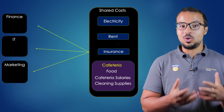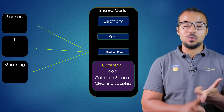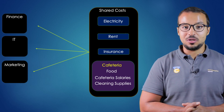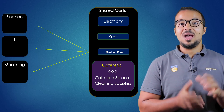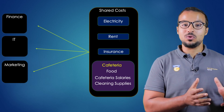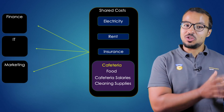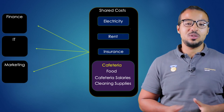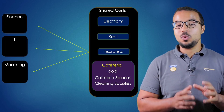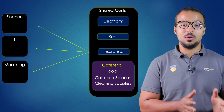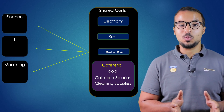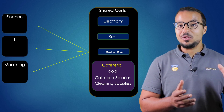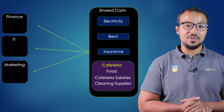The shared cost center is used to post the electricity, rent, insurance, cafeteria, and any other shared expenses. We pay the rent and electricity once for the entire building. Then we allocate those costs from the shared cost center to the departmental cost centers — something we do every month. So how can we streamline this process and make it faster, easier, and reduce human mistakes?